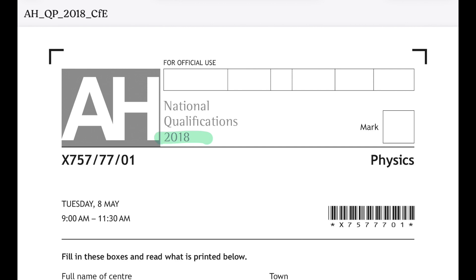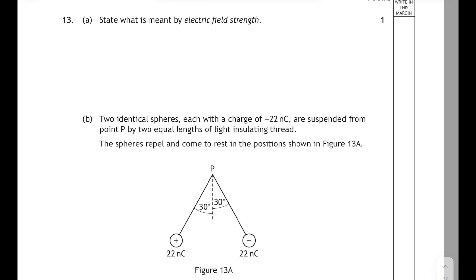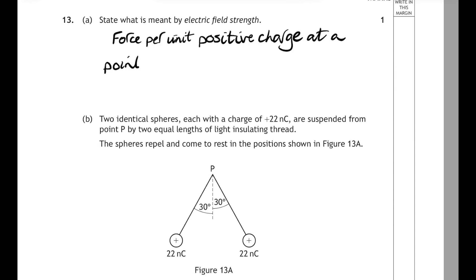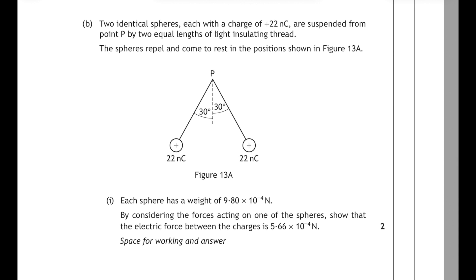Now let's look at the 2018 paper, question 13. Part A: state what is meant by electric field strength. This is a definition you should learn off by heart — it is the force per unit positive charge at a point in an electric field. Don't forget to say 'positive charge', as that is the convention for electric field direction.